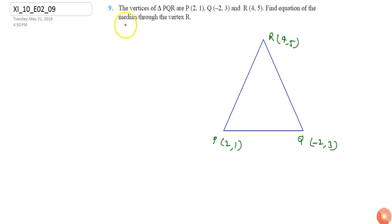So the equation of median through the vertex R. The median is the line which connects any vertex of the triangle to the midpoint of the opposite side.